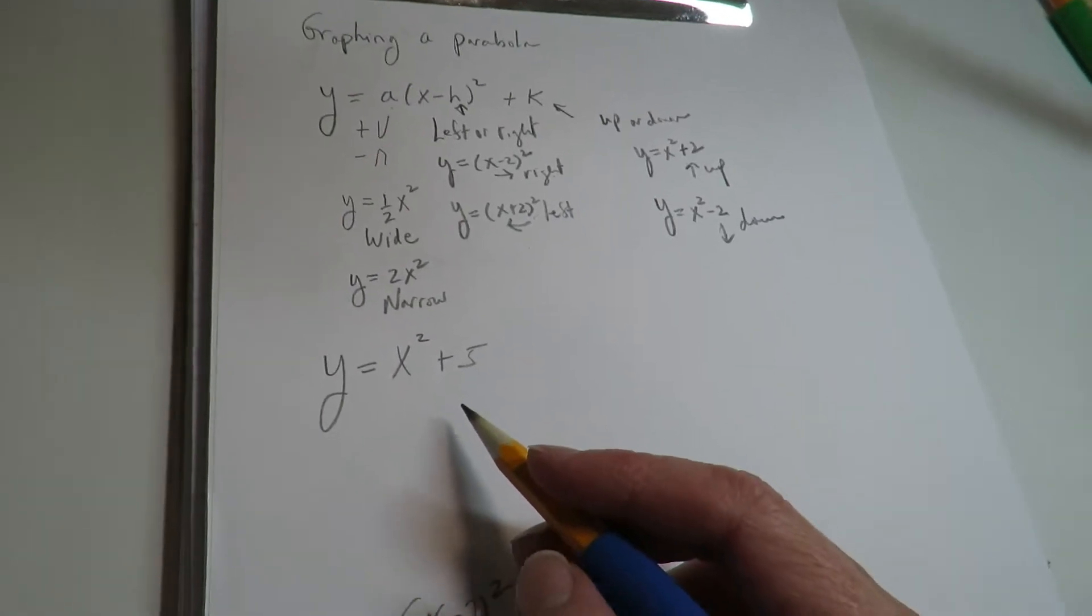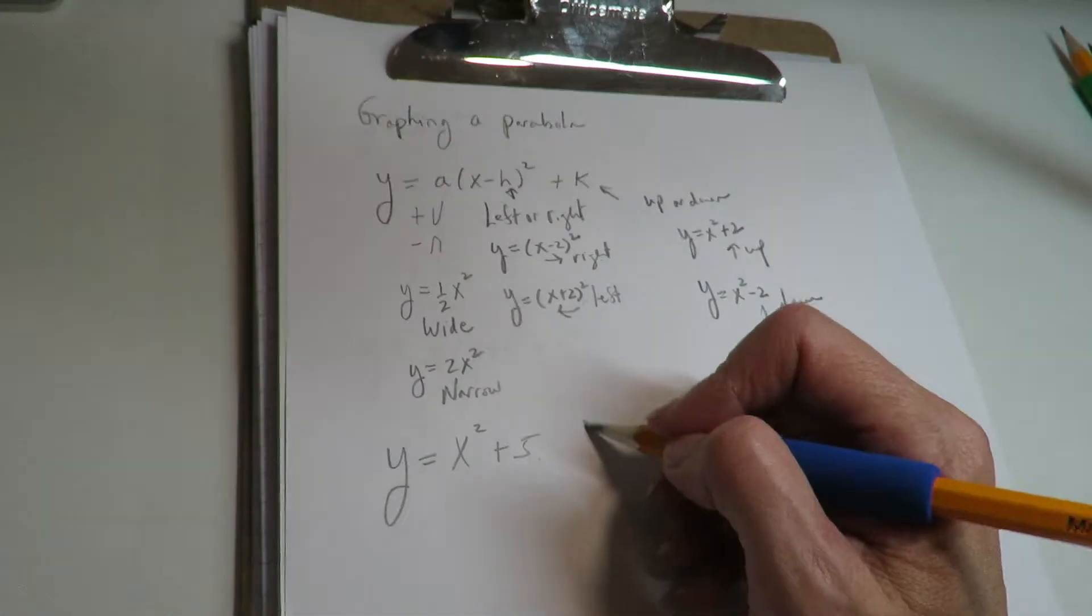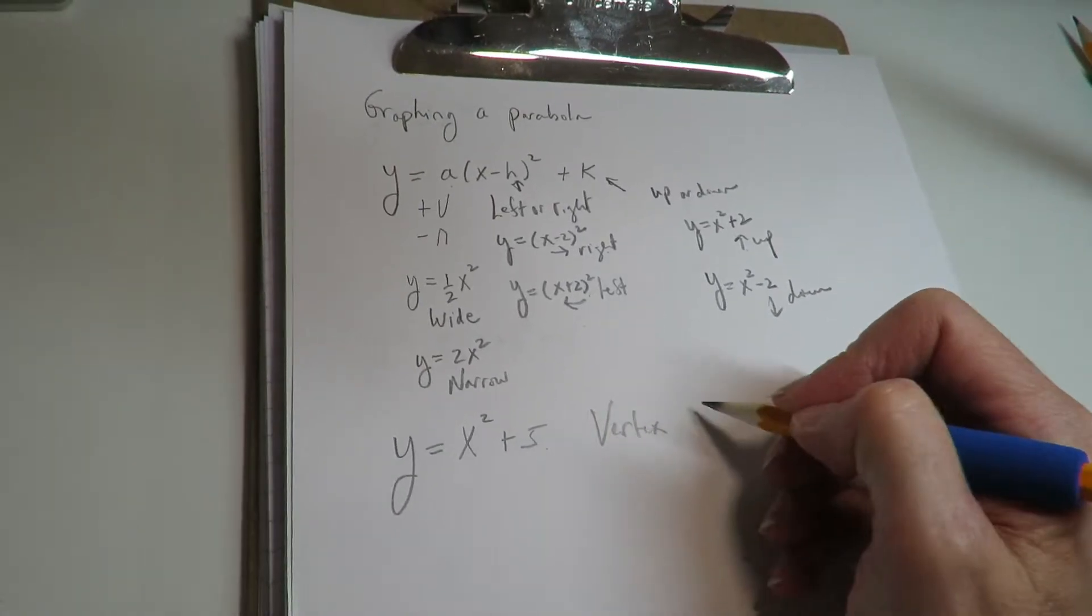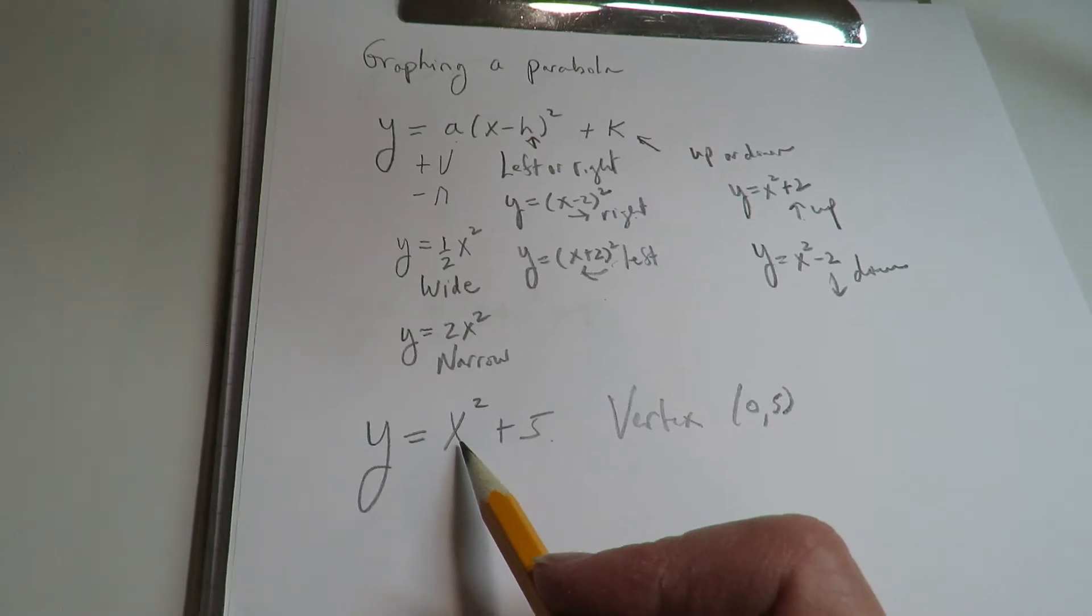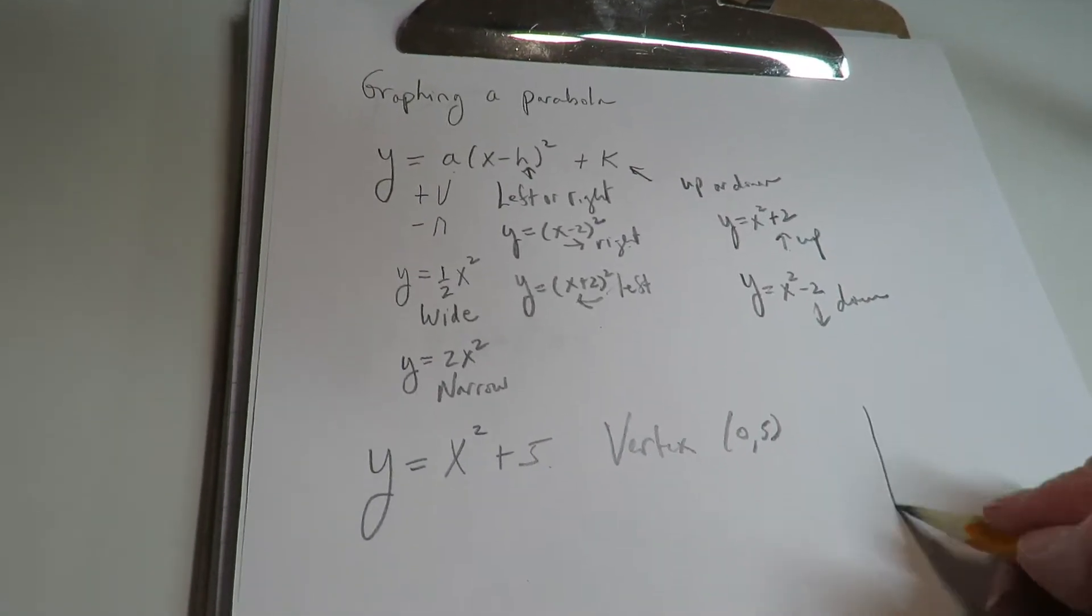So which way is this one going? Right, this is a k value. So if you wanted to find the vertex, the vertex would be 0, 5. There's nothing inside the x squared, so it's not pushed left or right. It's just pushed up 5.